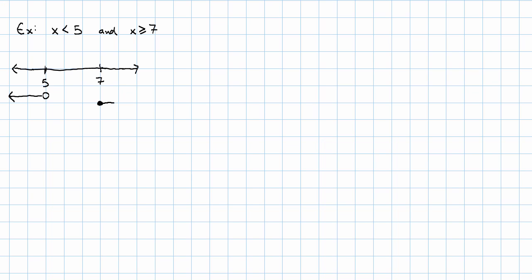x is greater than or equal to 7. Where do these overlap? Well, they don't. So, if I wanted to say what are all the points where they overlap? There aren't any. This compound inequality has no solution. That makes sense, right? There aren't any numbers that are at the same time smaller than 5 and also at least as big as 7. Everything that's smaller than 5 is also smaller than 7.